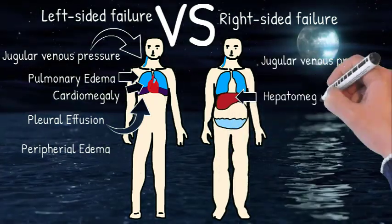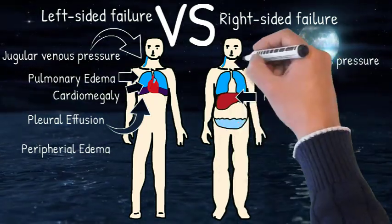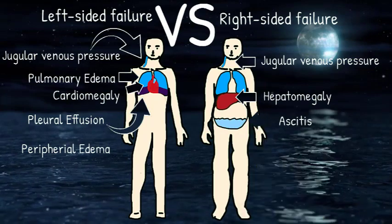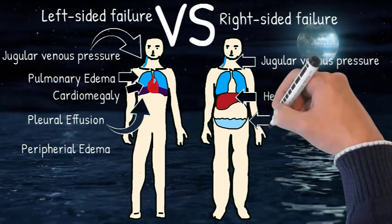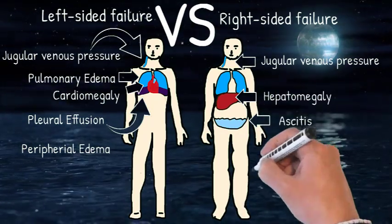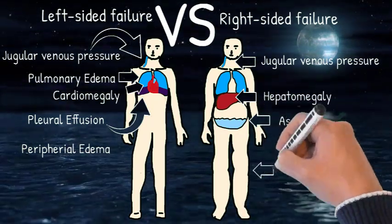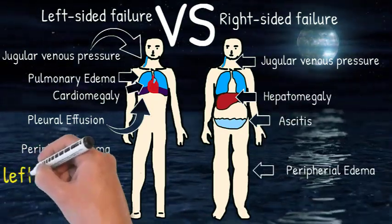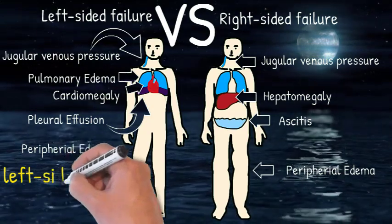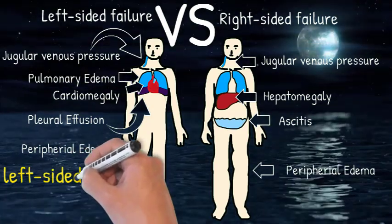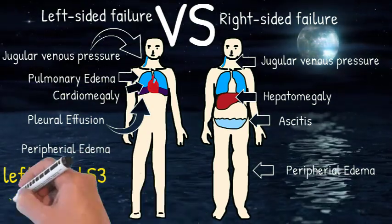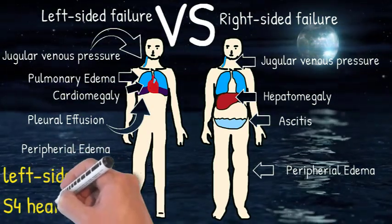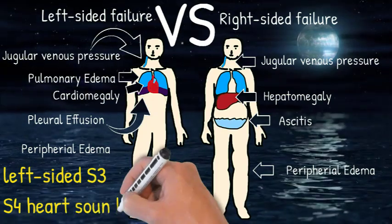Right heart failure causes ascites and peripheral pitting edema. The left-sided S3 is the first cardiac sign of left heart failure. Excess fluid in the left ventricle produces the S3 heart sound, while increased left ventricular end-diastolic pressure produces the S4 heart sound.